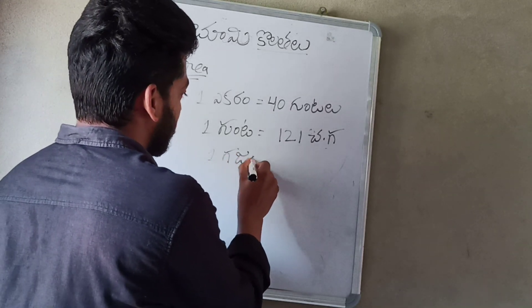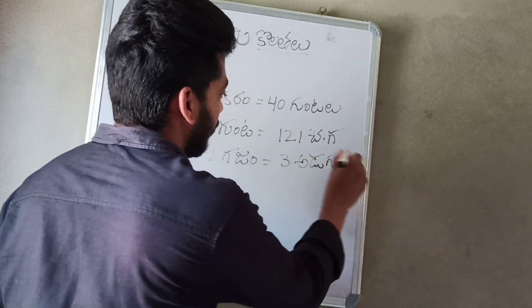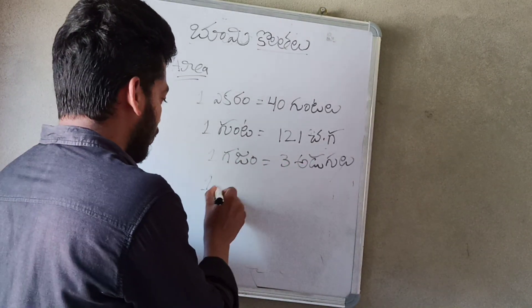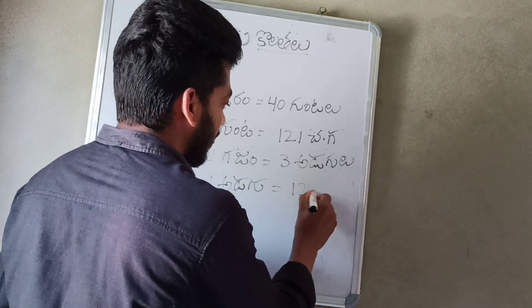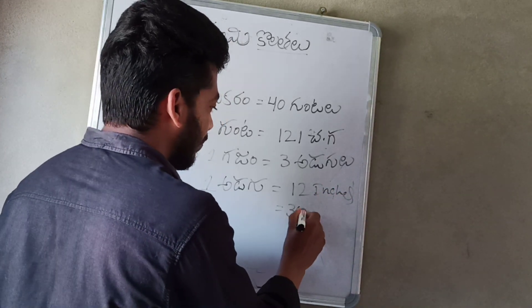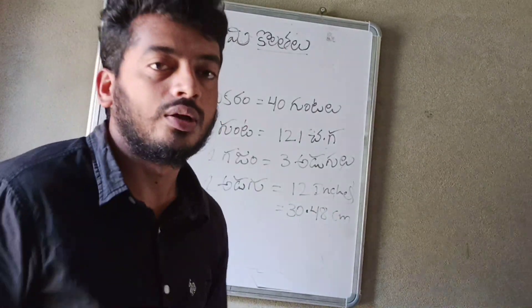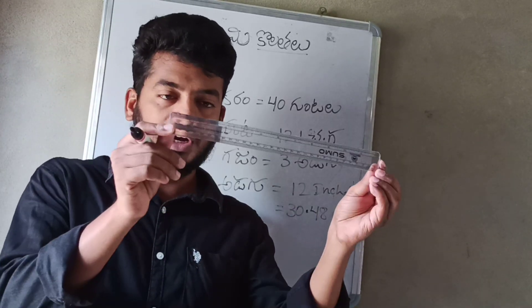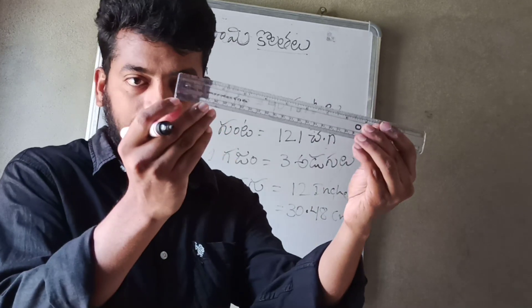One foot is equal to 30.48 cm. So 1 foot equals 30.48 cm. Let's look at the scale.